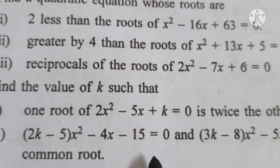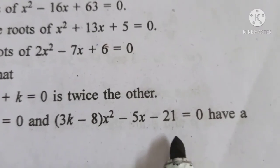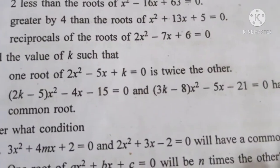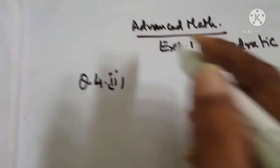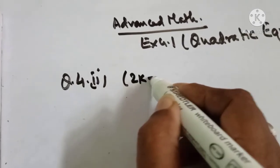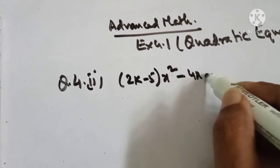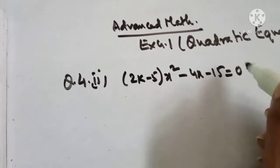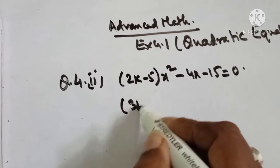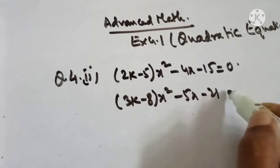Question 4: (2k minus 5)x squared minus 4x minus 15 equals 0, and (3k minus 8)x squared minus 5x minus 20 equals 0. These two equations have a common root. We have to find out the value of k.